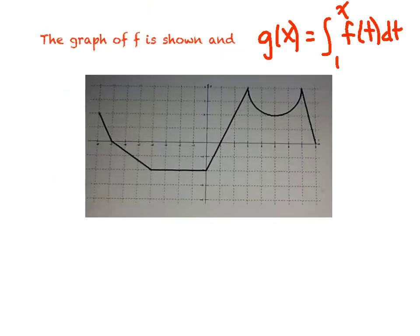We're going to focus on one question today with a bunch of little parts. We're given this accumulation function — I know that because the upper bound is an x, so it's going to accumulate area until you tell it to stop. It's very important to understand who you're looking at. This says the graph of f is shown, and g of x is this function here, so let's label the graph with a big f.